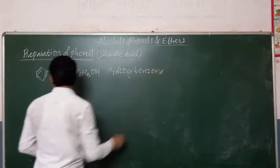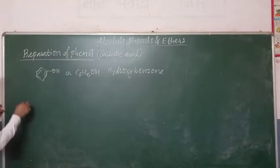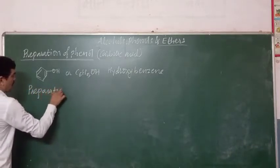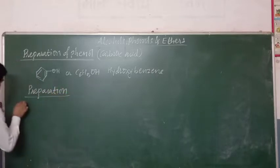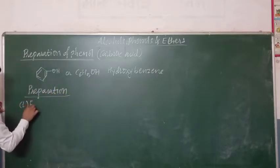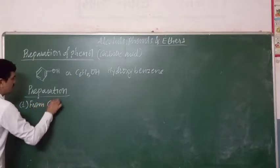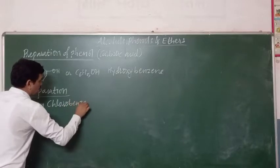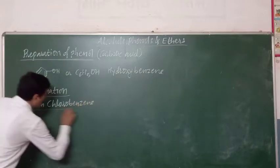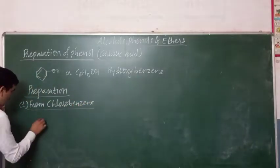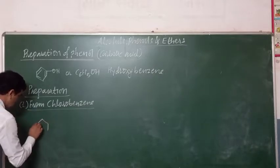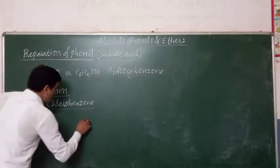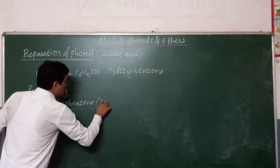This phenol has different methods of preparation. Number 1: from chlorobenzene. Chlorobenzene is an aryl halide. From this chlorobenzene, phenol is prepared by Dow's process.